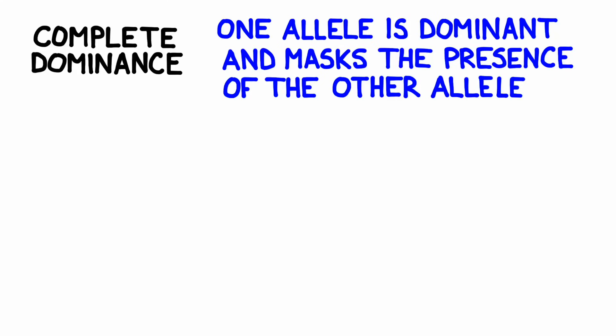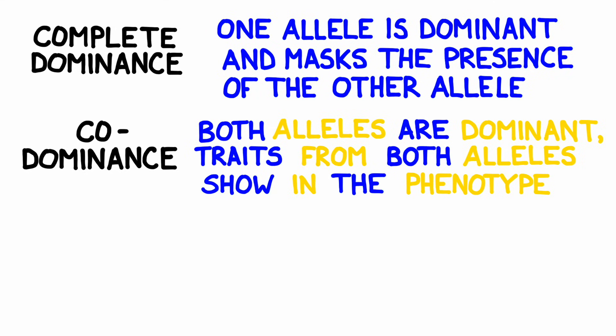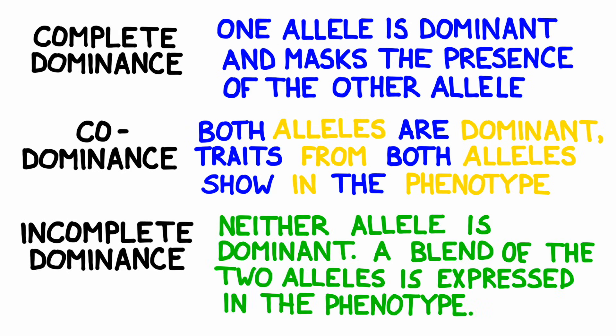To finish up, we're going to write out a formal definition for each type of dominance. In the case of complete dominance, one allele is dominant and it masks the presence of the other allele — only one of the alleles is expressed in the phenotype. With co-dominance, both alleles are dominant, and traits from both alleles are expressed in the phenotype. With incomplete dominance, neither allele is dominant, and a blend of the two alleles is expressed in the organism's phenotype.